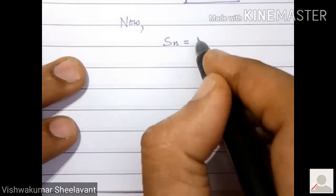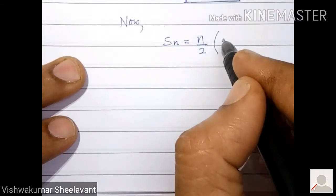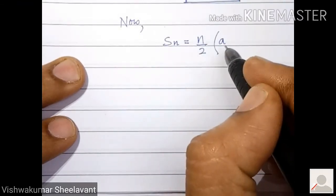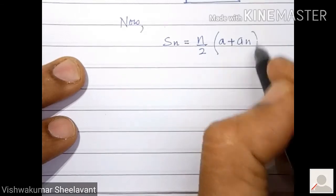Now, n we know, first term and last term also we know, so we will make use of Sn equal to n by 2 into the bracket, a plus an.